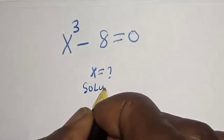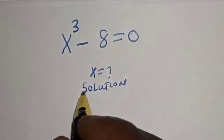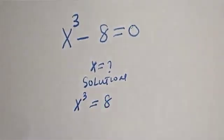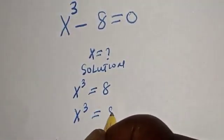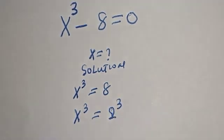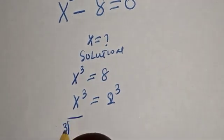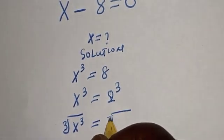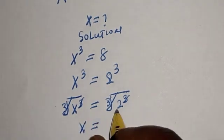Solution. The question is s raised to power 3 minus 8 is equal to 0. Then let's solve: s raised to power 3 is equal to 8, which means s raised to power 3 is equal to 2 raised to power 3. Taking the cube root of both sides, this gives us s is equal to 2.